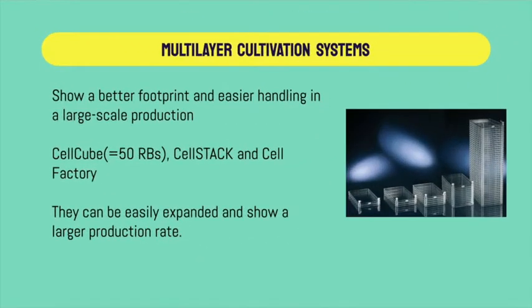Another alternative would be multi-layer cultivation systems, which show a better footprint and easier handling in large-scale production. Examples include stack devices such as CellCube (Corning), the Cell Stack (also Corning), and Cell Factory (Thermo Scientific). They reduce incubator space, can be easily expanded, and show a larger production rate. An example is the increase of bovine RSV vaccine in bovine cell lines in comparison to roller bottles with comparable total surface area.